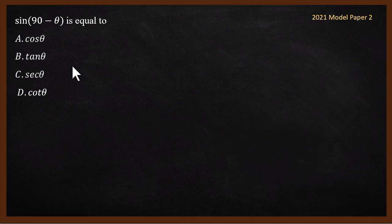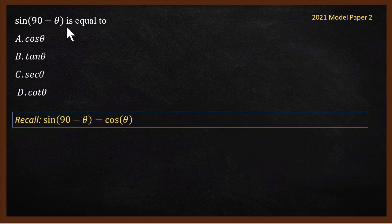The question is: sin(90° − θ) equals what? We know that sin(90° − θ) is cosθ, so the correct answer is A. In the exam they might ask any of the complementary angle identities — cos(90° − θ), tan(90° − θ), sec(90° − θ). Practice them all.